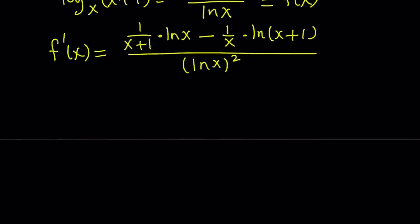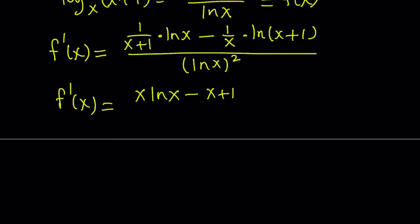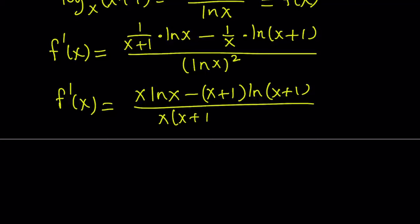Let's make a common denominator and write f' in the simplest form. If you multiply ln(x) by x and ln(x+1) by (x+1), you get a common denominator of x(x+1). So f'(x) = [x·ln(x) − (x+1)·ln(x+1)] divided by [x(x+1)·(ln x)²]. This is the derivative of f.